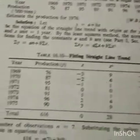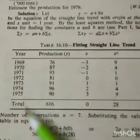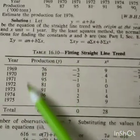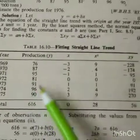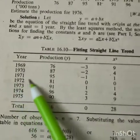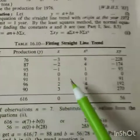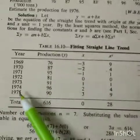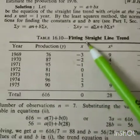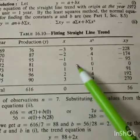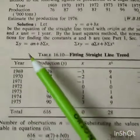So we are putting the values here. These are y values - the production values. We have taken the middle most year as base year, so it is 0, and previous years are going as minus 1, minus 2, minus 3, and following years plus 1, plus 2, plus 3.